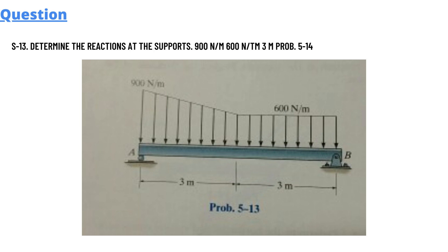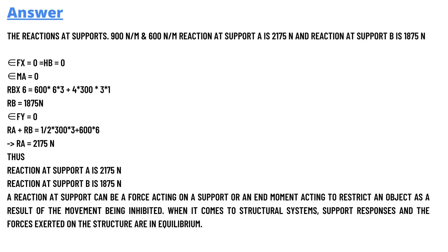So to solve the question, the reaction at support 900 N/m and 600 N/m at support point A is 2175 N, and the reaction at support B is 1875 N.